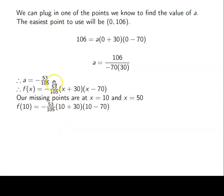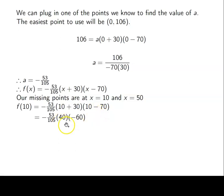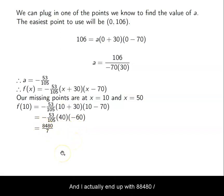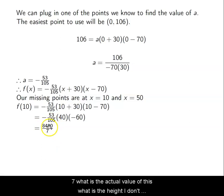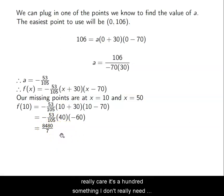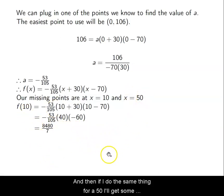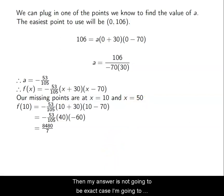Plug in 10: I get negative 53 over 105 times (10 minus 70) times (10 plus 30), which is negative 53 over 105 times negative 60 times 40. The two negatives cancel out, and I can cancel the 5 with the 60. I end up with 8,480 over 7. I don't really need the decimal — it's somewhere around 100-something. I'll keep exact values. Then for f of 50: negative 53 over 105 times (50 minus 70) times (50 plus 30), which is negative 53 over 105 times negative 20 times 80.